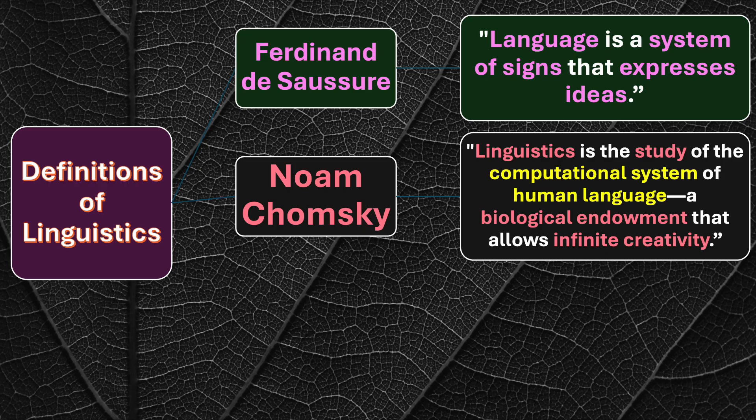Regarding the computational system of human language: just as language is a system of codes, a system of encoding and decoding, as a result we receive and express something. In the same way that we encode and decode symbols in computation, language comes together to form a set of ideas and opinions.